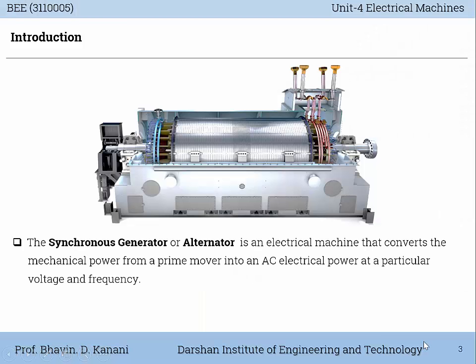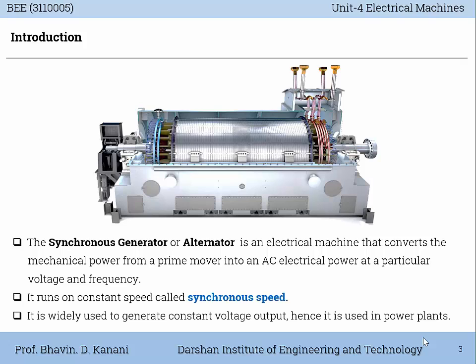The synchronous generator or alternator is an electrical machine that converts the mechanical power from a prime mover into AC electrical power at a particular voltage and frequency. It runs on constant speed called synchronous speed. It is widely used to generate constant voltage output, hence it is used in power plants.